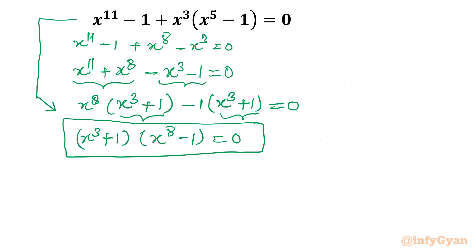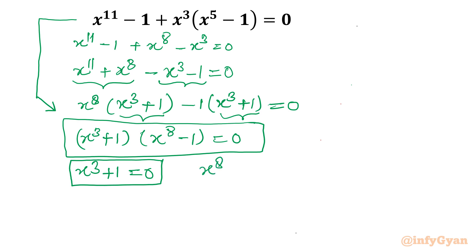Now we will target two equations. First equation: x^3 plus 1 equal to 0, from which we will get three solutions. Second equation: x^8 minus 1 equal to 0, from which we will have 8 solutions. So let us solve.